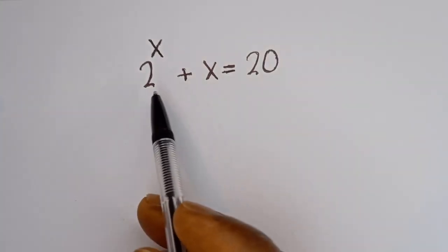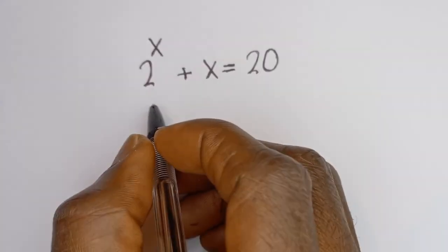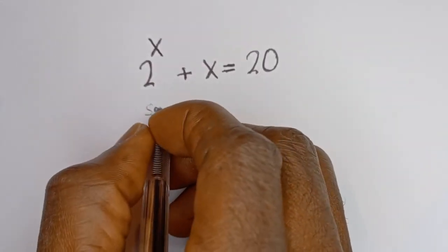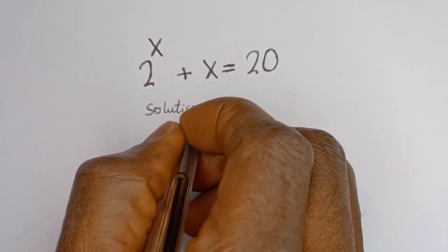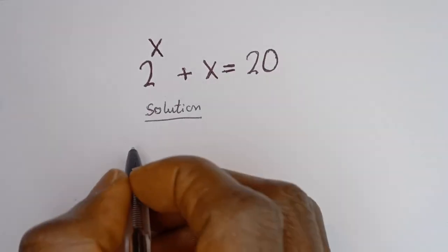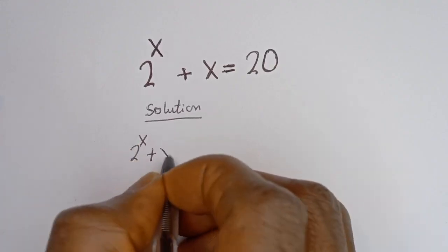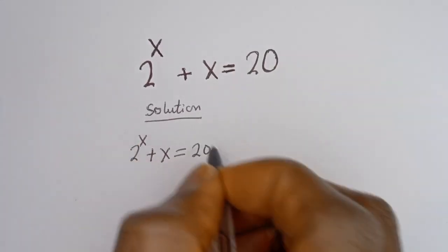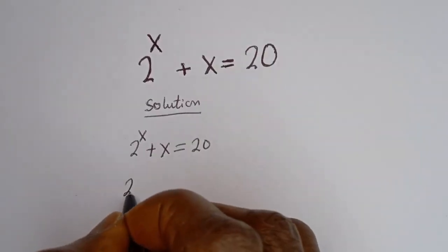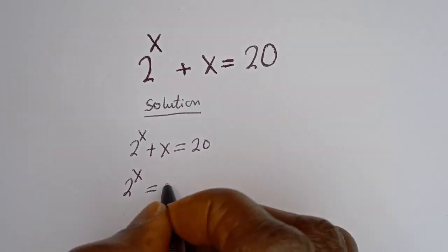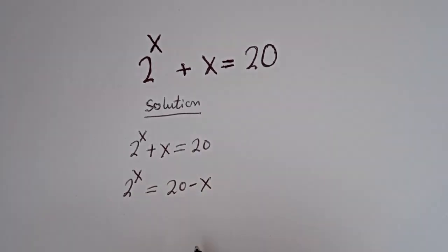Hello, how to solve for x in this equation: 2 to the power of x plus x is equal to 20. Solution: we have 2 to the power of x plus x is equal to 20. Taking x to the other side, we have 2 to the power of x is equal to 20 minus x.